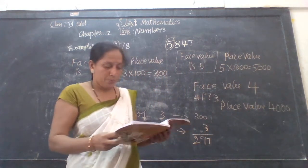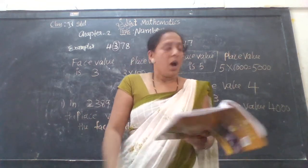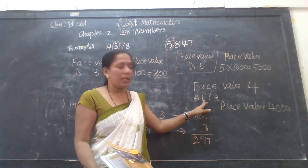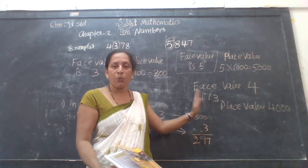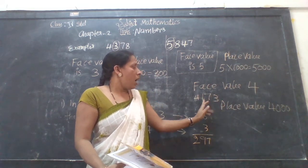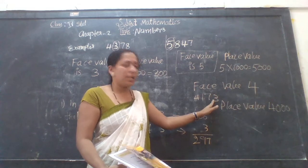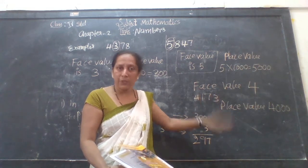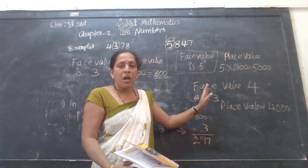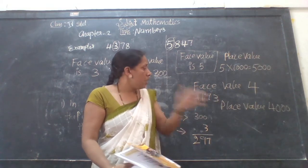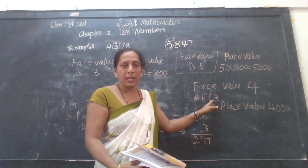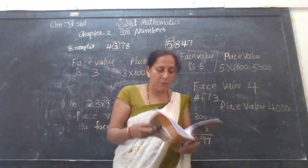Like that, we have to work it out. Now consider the digit 7. In which place is 7? The digit 7 is in the tens place. So the place value of 7 is 70. Like that, we have to consider the place value of each digit.